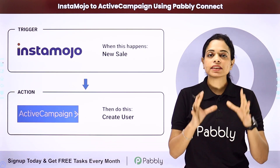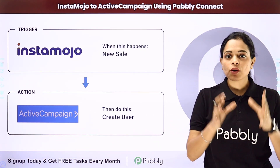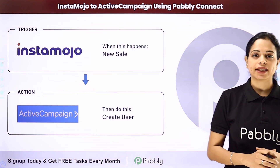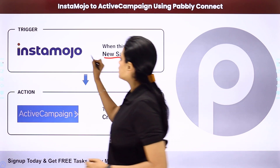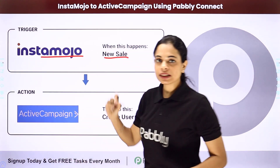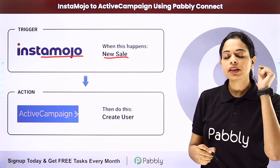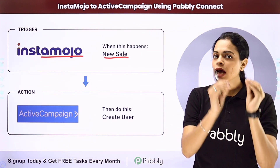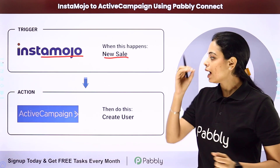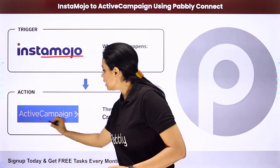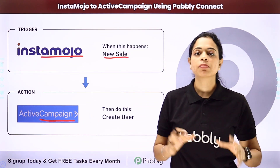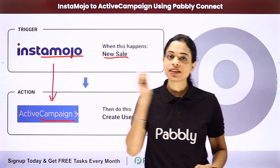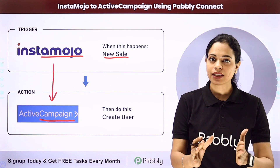In this video, we are going to see how on successful InstaMojo payments, you can add subscribers to ActiveCampaign using Pabbly Connect. Every time a new sale happens in InstaMojo, which is a payment gateway, the information of the user who has made the payment is automatically used to add that user as a subscriber in ActiveCampaign, which is an email marketing tool.